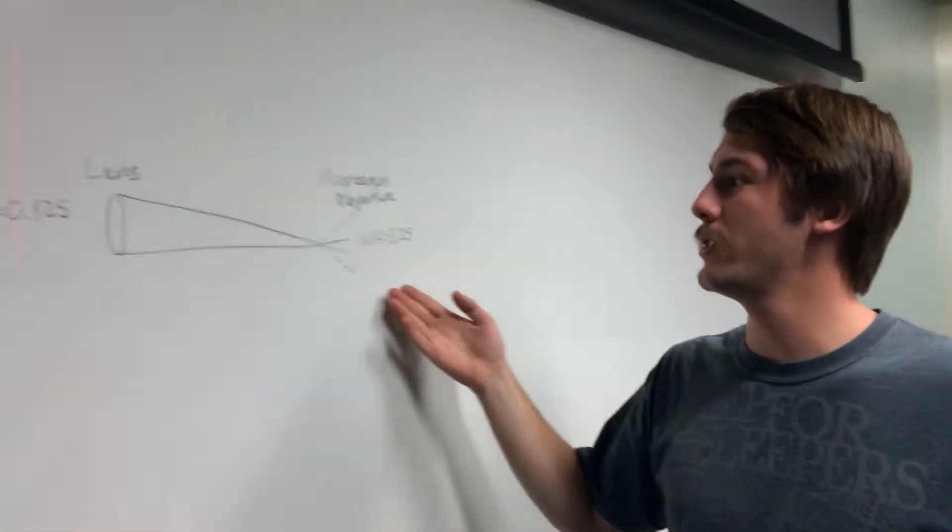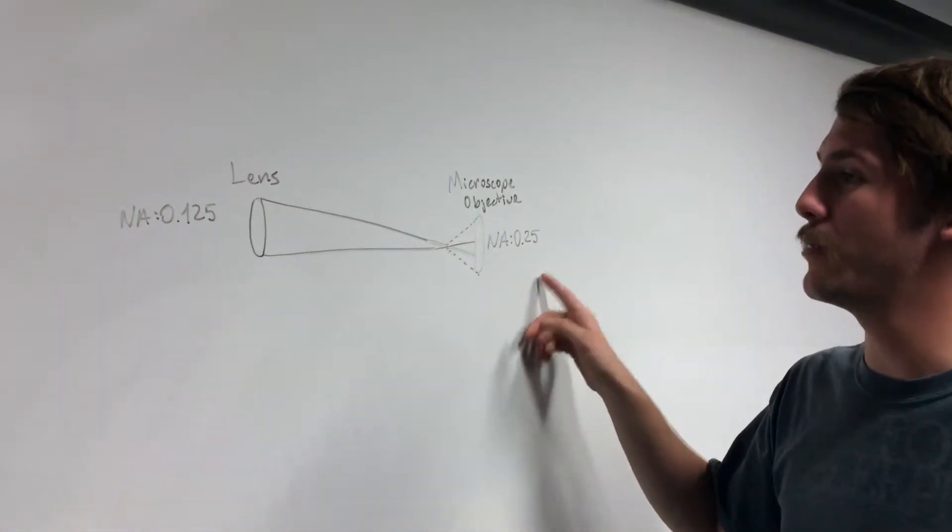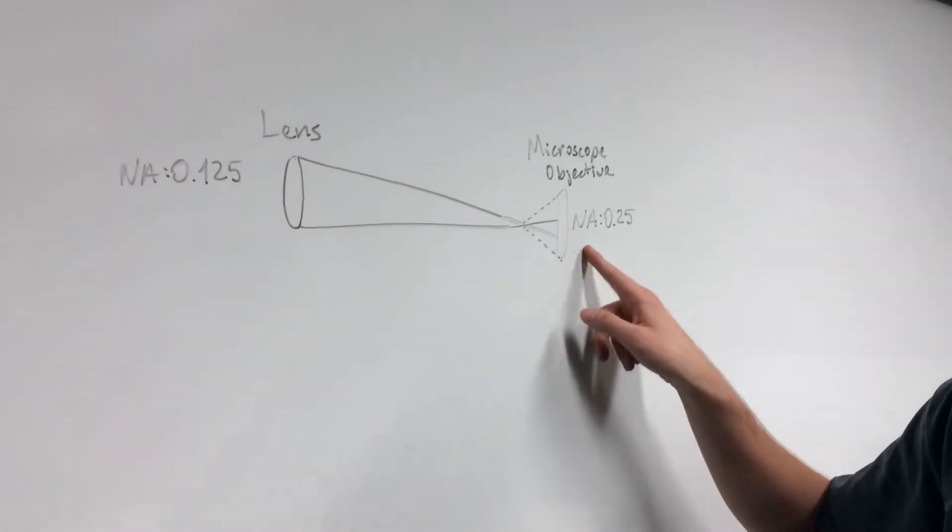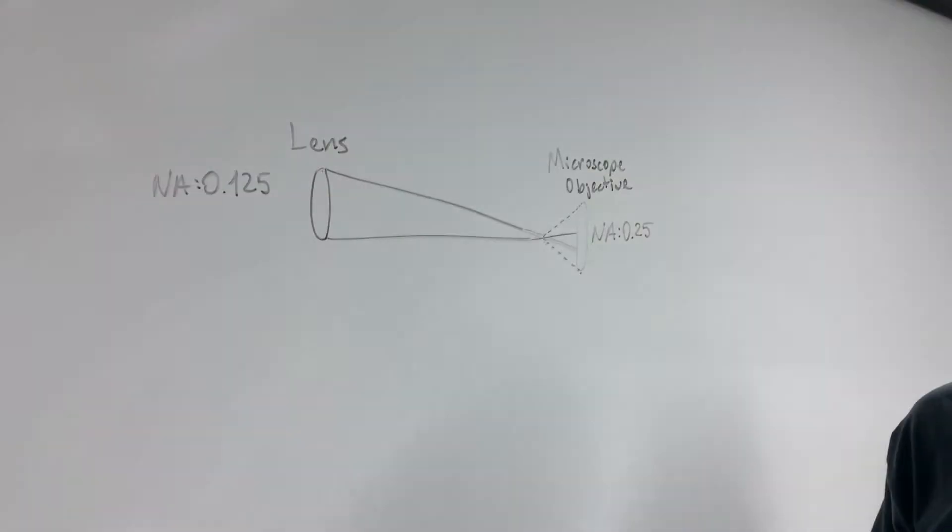An important part of this was choosing the right microscope objective NA. The important part was that the NA of the microscope objective is greater than the lens. That way we can underfill the microscope objective and sample the whole lens.